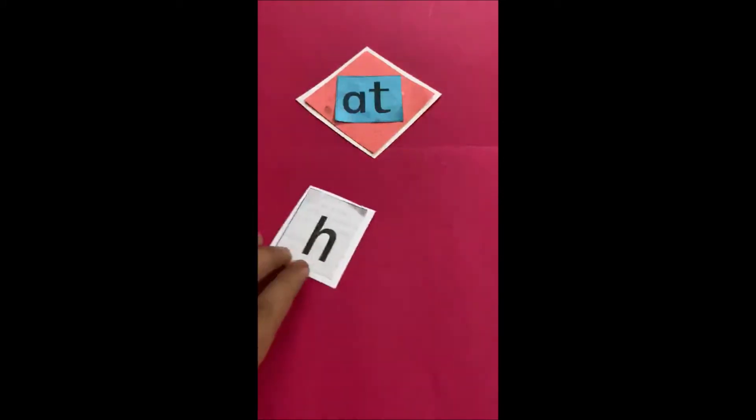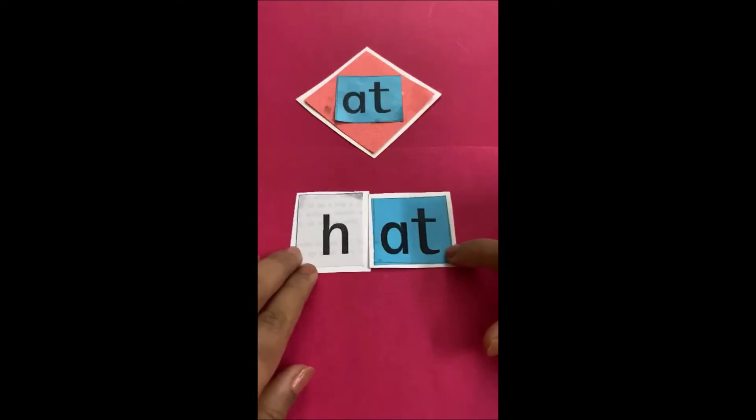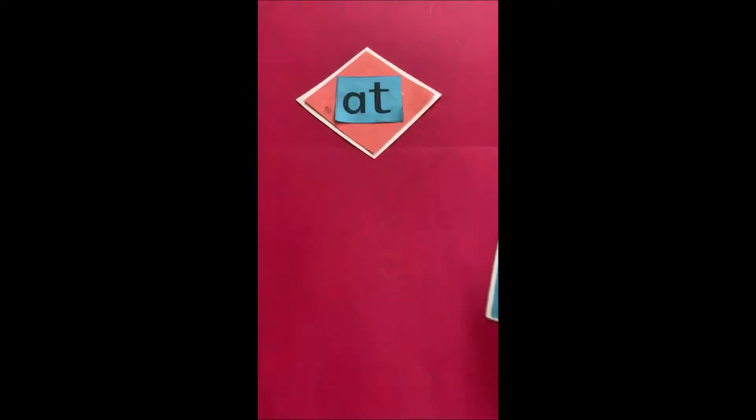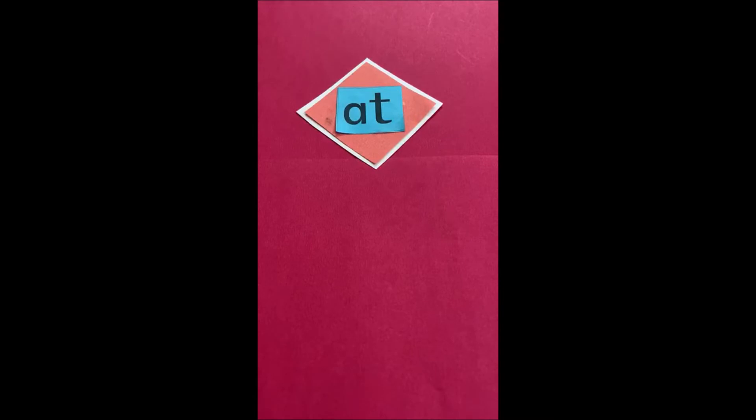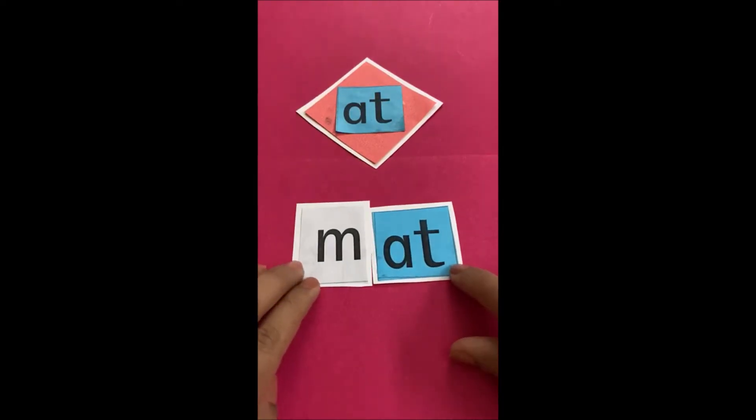Now comes H and at. Hat. Hat. You wear a hat on your head. At. And now comes letter M. M says M. And at. Mat. You sit on a mat.